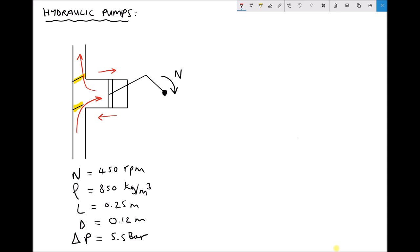The volume flow rate in this instance is a product of the volume of the cylinder and the rotational speed of the crank. The formula is: Q = A × L × N / 60, where A is the area of the piston head, L is the stroke length, and N is the rotational speed in RPM. The piston head has a diameter of 0.12 meters, giving a radius of 0.06 meters, so the area is π × (0.06)². The stroke length is 0.25 meters.